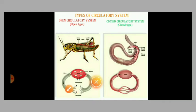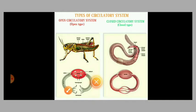Arthropods — meaning insects like grasshopper, cockroach, bedbug, and scorpion — have an open type circulatory system. Molluscs also have open type; examples include snail and octopus. Ascidians, also known as sea squirts, which live in the sea, also have open type.